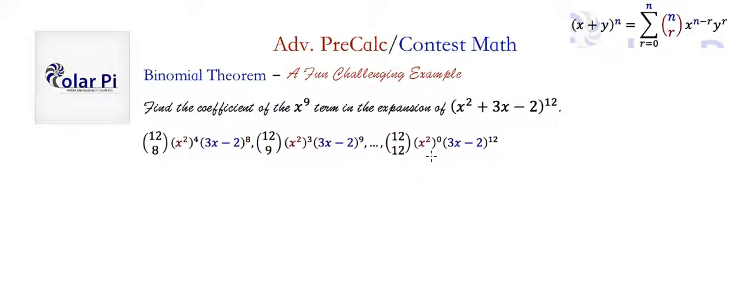And then, in this very last guy, though, since we'll have this being x to the 0th power, we just have to pick out, well, other than the 12 choose 12, which is 1, other than that, we just have to worry about what the x to the 9th term will be in this part. And that's going to come from 12 choose 3, and then 3x to the 9th and negative 2 to the 3rd.